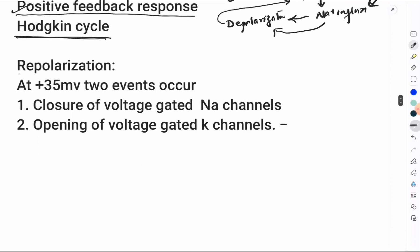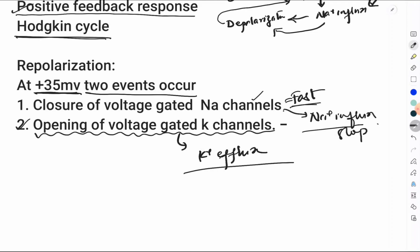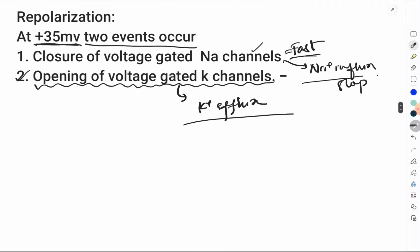When the potential hits plus 35 millivolts, two events occur: first, closure of the voltage-gated sodium channels (fast channels), stopping the sodium influx completely; and second, opening of voltage-gated potassium channels. With the opening of these potassium channels, potassium efflux begins immediately and rapidly, causing the rapid phase of repolarization.